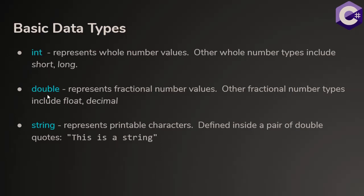Then we have the double data type. The double data type is the default data type for holding fractional numbers. And the string is the data type we use to hold printable characters. Strings are defined inside a pair of double quotes. So this is a string is a set of printable characters, spaces and all, defined inside a pair of double quotes.